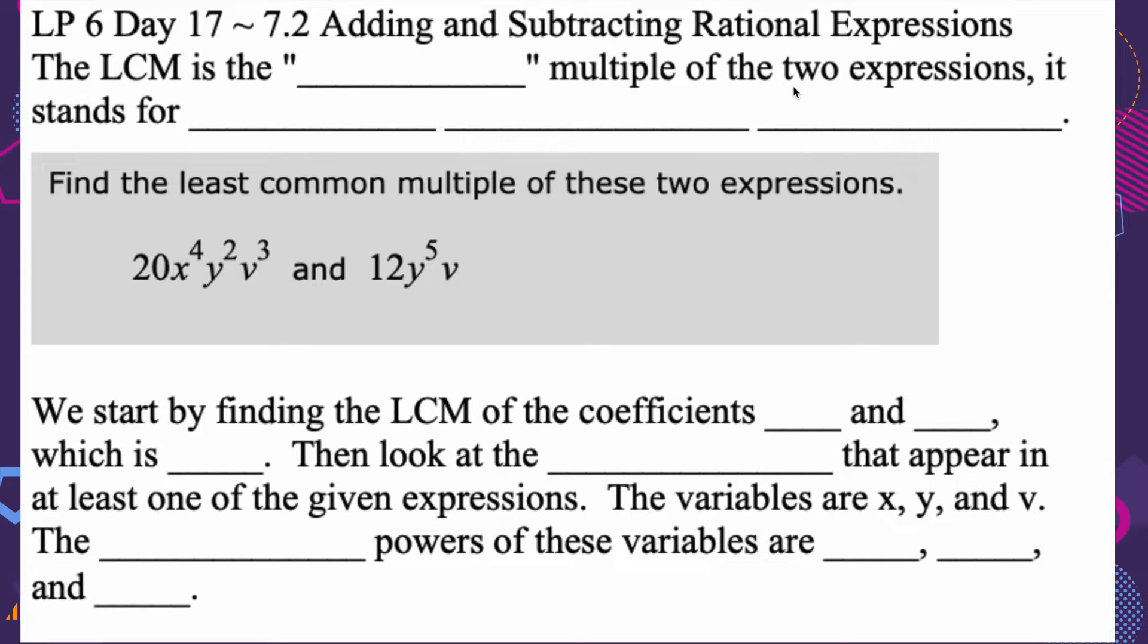Okay, so now we're going to look at lowest common multiple, just kind of review this concept so that we can continue on the idea of factoring. So the LCM is the smallest multiple of two expressions. It stands for lowest common multiple. So a lot of the time they say lowest common multiple in the problems, but they also say LCM, kind of interchangeable there.